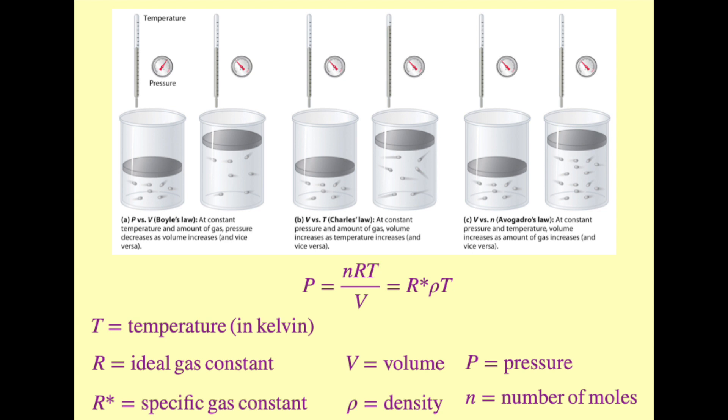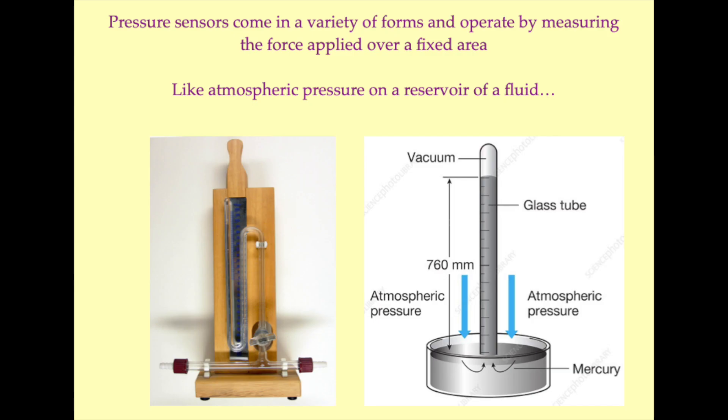The ideal gas law has itself been extensively observationally validated and has been found to be appropriate for gases that are not at extremely low temperatures or extremely high pressures. A variety of different physical mechanisms have been exploited in the design of gas pressure sensors, but common to all of these designs is the principle of measuring the force applied to a fixed surface area.